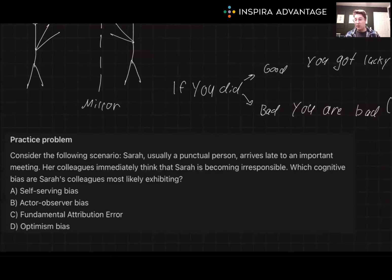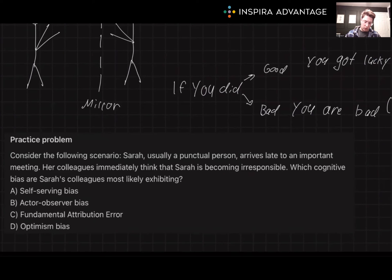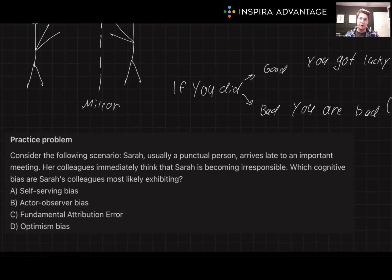Consider the following scenario: Sarah, usually a punctual person, arrives late to an important meeting. Her colleagues immediately think that Sarah is becoming irresponsible. What cognitive bias are Sarah's colleagues most likely exhibiting? The correct answer is C, fundamental attribution error. Sarah's colleagues are attributing her lateness to an internal characteristic — irresponsibility — overlooking possible external factors that could have caused her lateness.